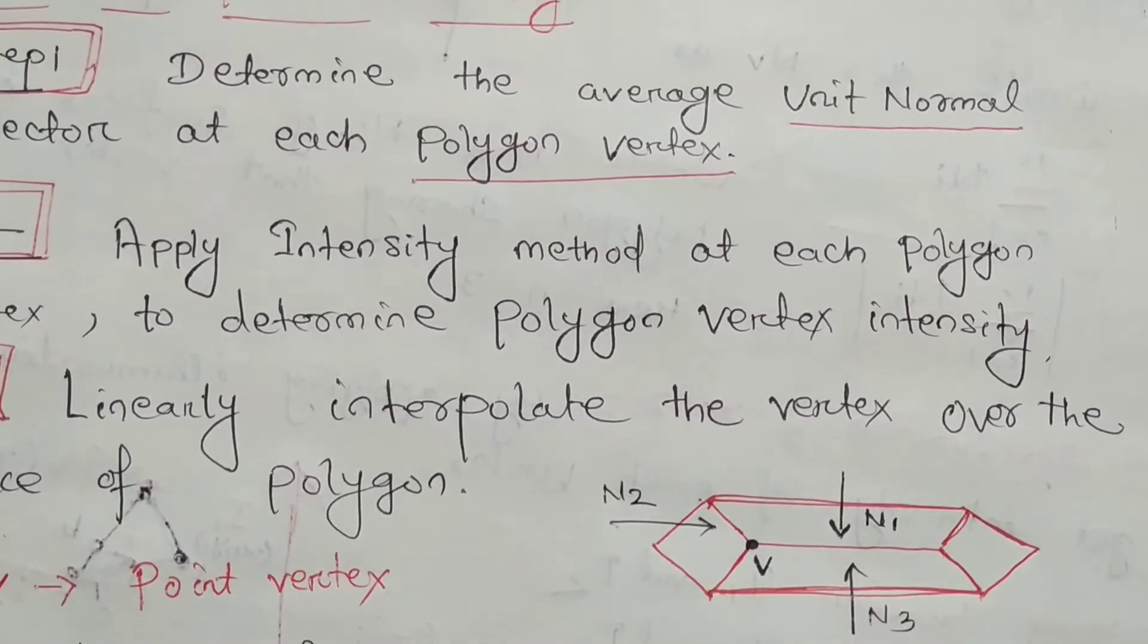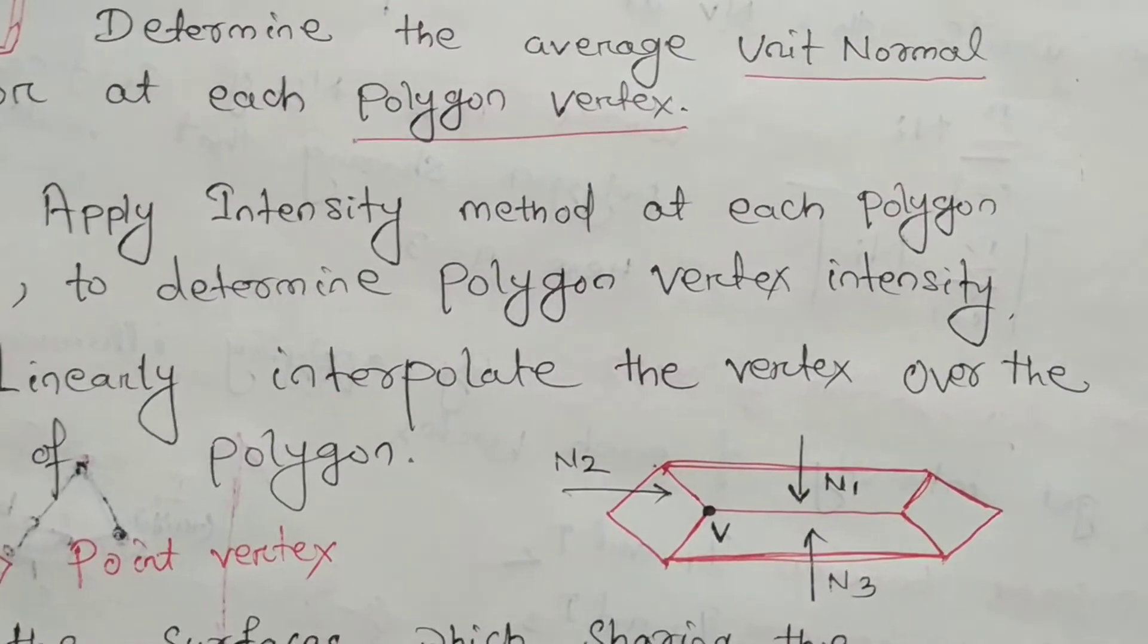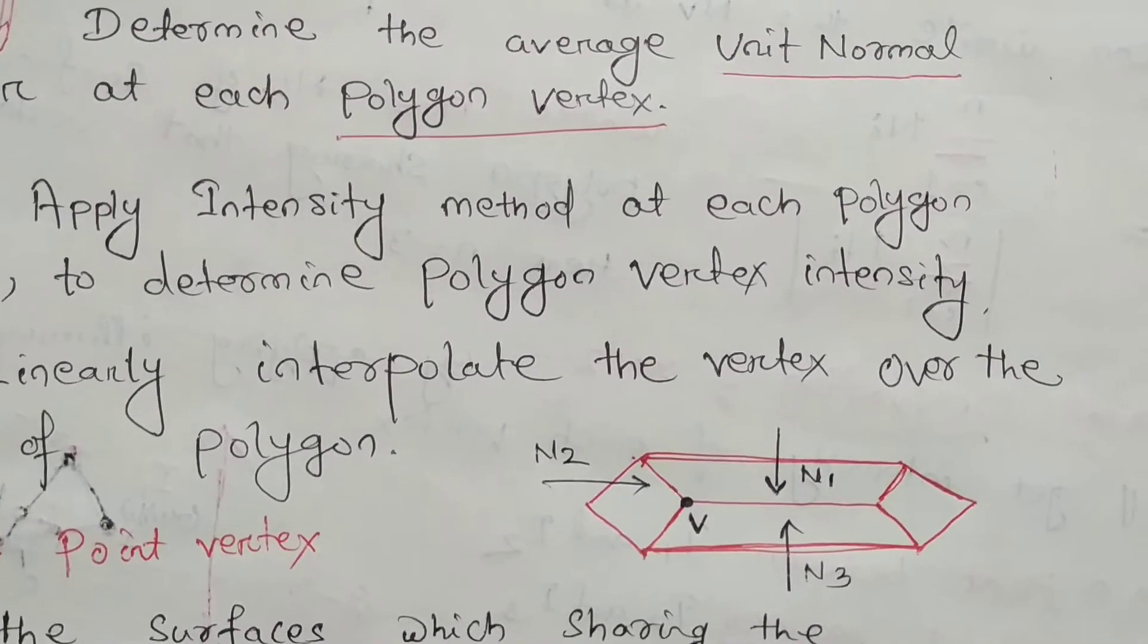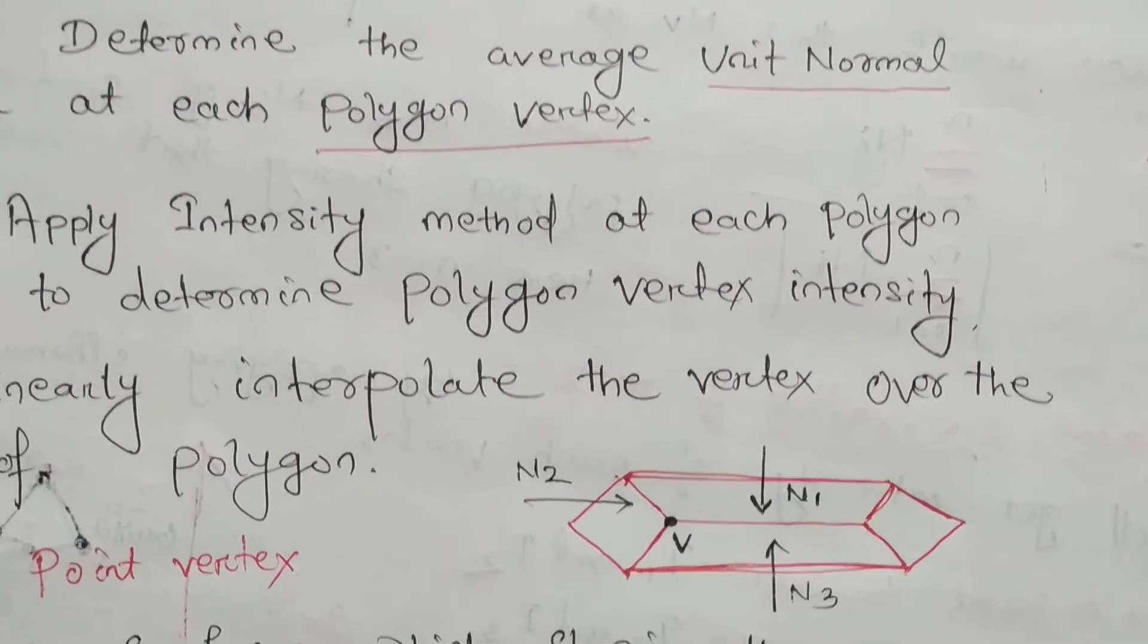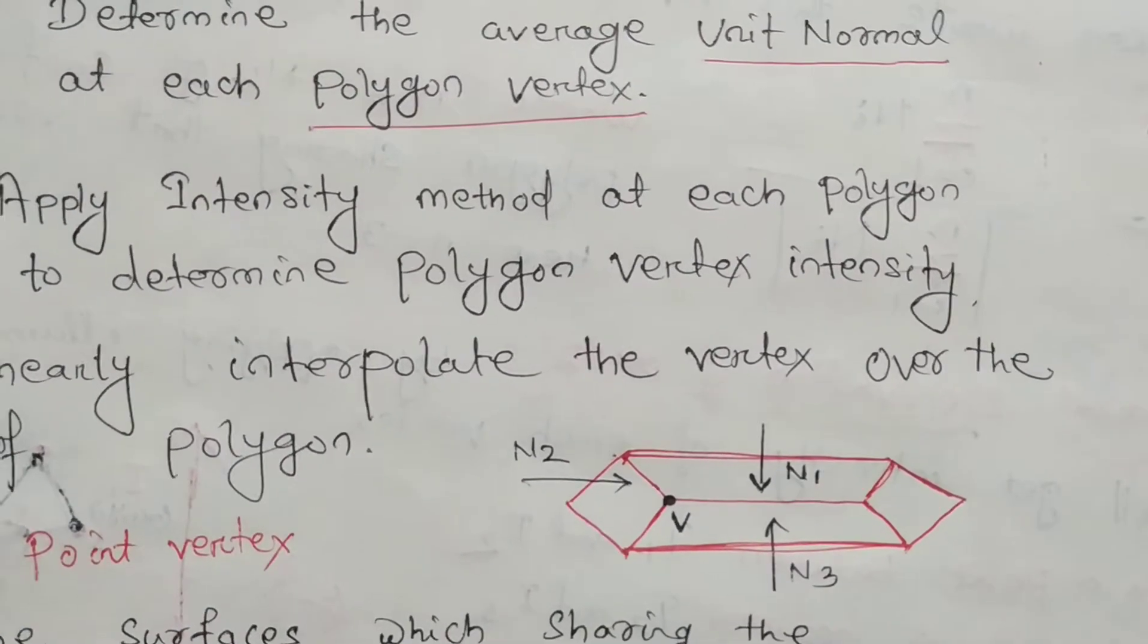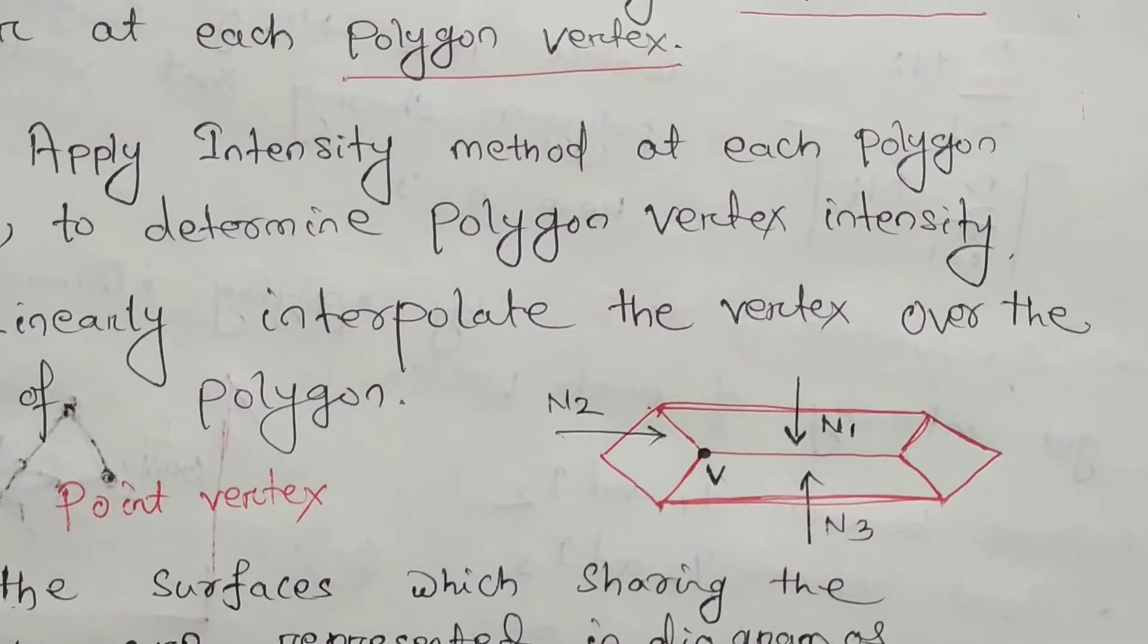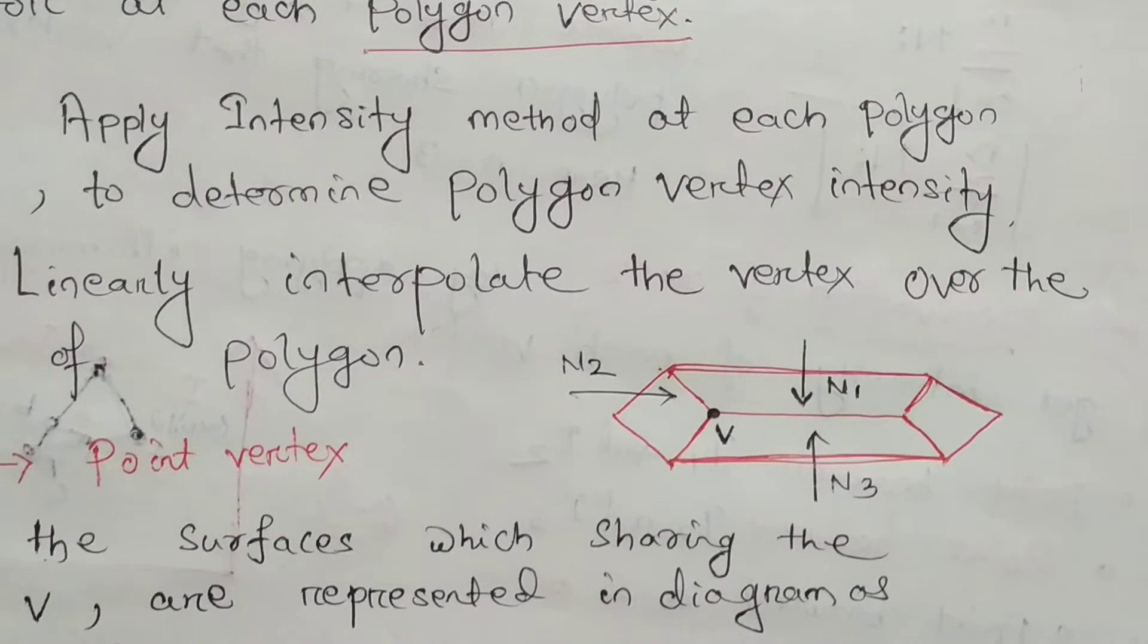First consider this polygon which I have drawn. You know what is polygon? Polygon means when there is no curvature, then it is a polygon. V is the point vector and normals N1, N2, N3 are sharing this point vector.